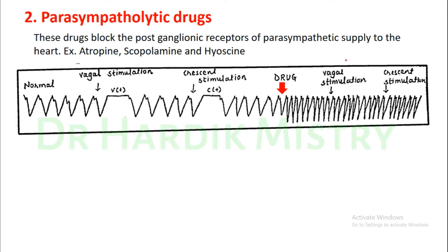Important point: 'mimic' means having the same action, 'lytic' means having the opposite action. Parasympatholytic drugs block the postganglionic receptors of parasympathetic supply to the heart. These include atropine, scopolamine, and hyoscine.